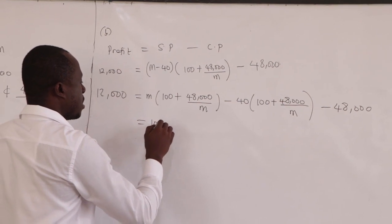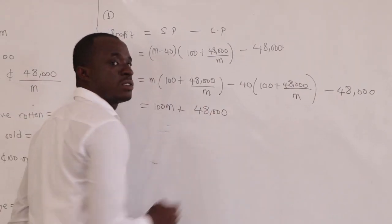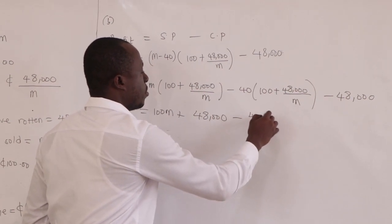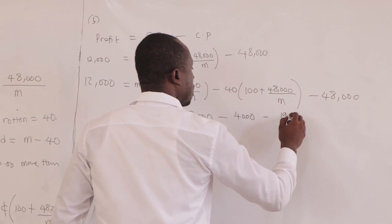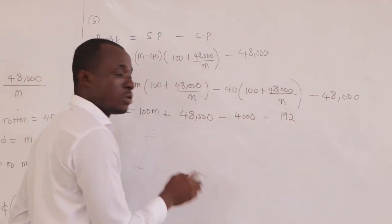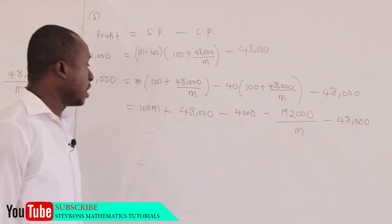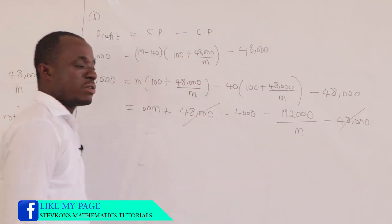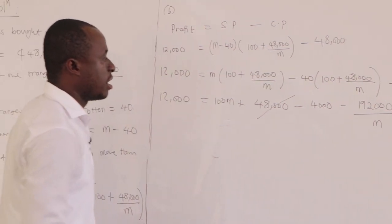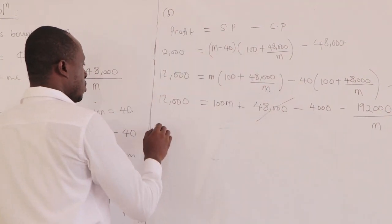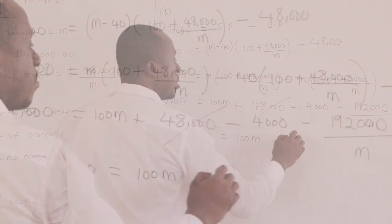Expanding: M times 100 gives 100M, and M times 48,000 over M cancels to give 48,000. Then minus 40 times 100 gives 4,000, and minus 40 times 48,000 over M gives 1,920,000 over M. So we have 12,000 equals 100M plus 48,000 minus 4,000 minus 1,920,000 over M minus 48,000. The 48,000 terms cancel, giving: 12,000 plus 4,000 equals 100M minus 1,920,000 over M, which is 16,000 equals 100M minus 1,920,000 over M.